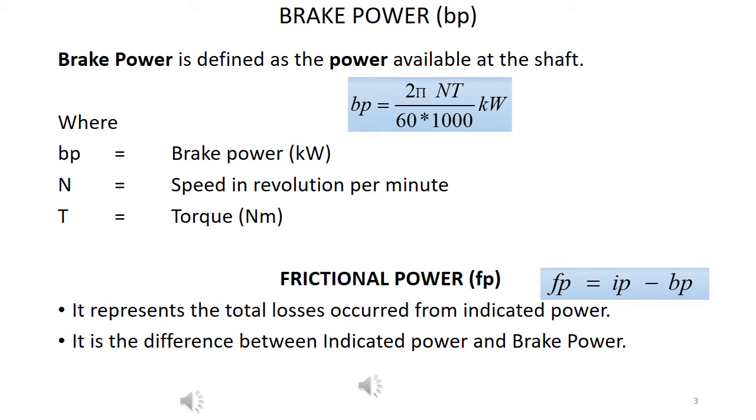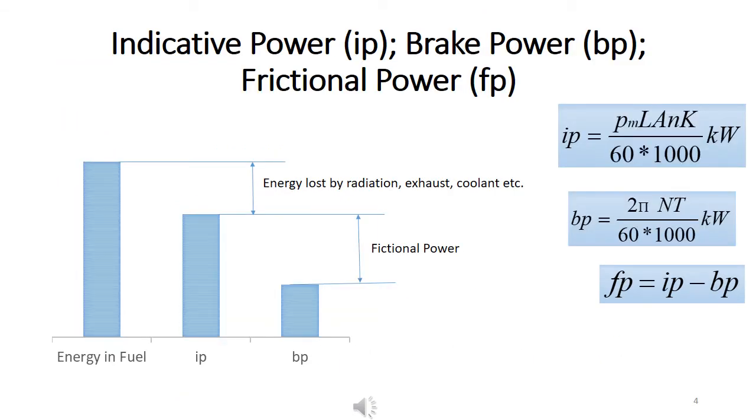Frictional power is the difference between indicated power and brake power. That is, FP equals IP minus BP. It actually represents the total losses occurred from the indicated power. When a fuel is burnt, all the energy will not be converted to useful work. There will be some losses due to radiation, and some losses due to the exhaust gases, and small losses by cooling the engine, and other major loss will be friction losses.